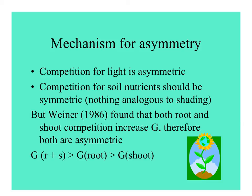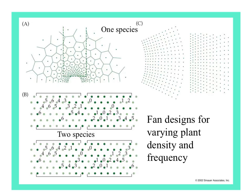I want to end by looking at this diagram showing different planting designs used to measure effects of density. Looking at one species, you have them placed close together — within a meter — and increasingly farther apart. With plants that don't move once they're planted, they do grow, and so that changes their competition. Many interesting experiments have been done with these designs.